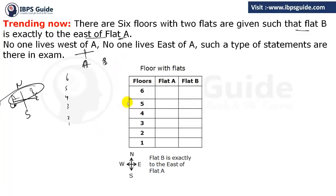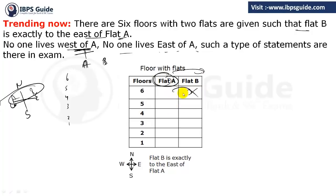This is flat A and this is flat B. Some statements may also say no one lives to the west of A — meaning A must be at the westmost position. Or no one lives to the east of A — meaning A must be at the eastmost position, or if A is at the east flat, then flat B position has no one.